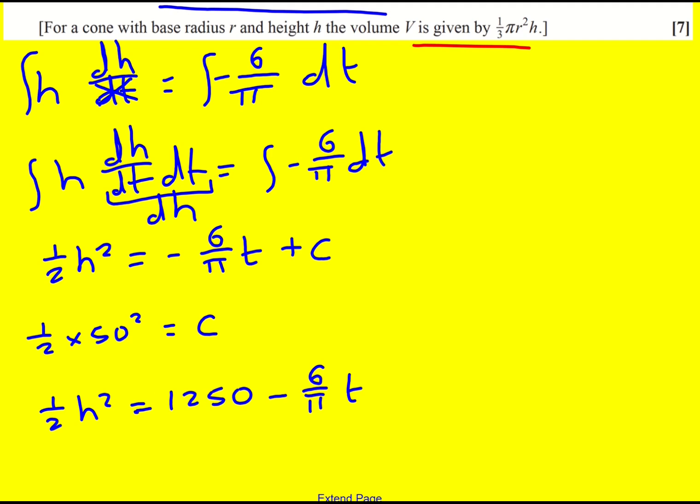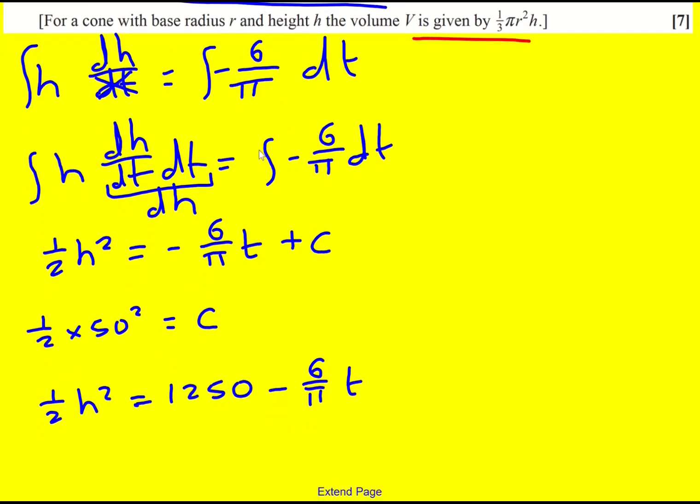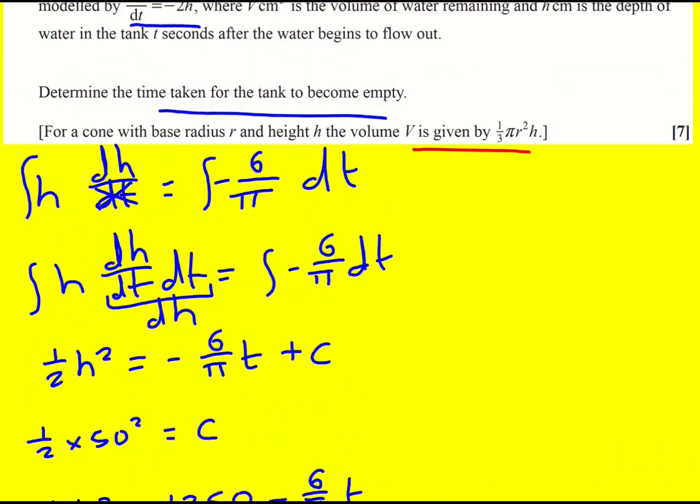I could make H a subject if I wanted or whatever, but I don't need to here. I'm just looking for the time that it takes the tank to become empty. So when H equals 0, 6 over pi T is going to equal 1250. I've just rearranged it. And therefore T will equal 1250 pi over 6. Now that is the exact answer.